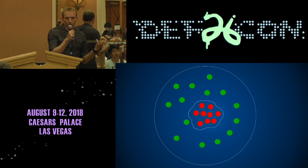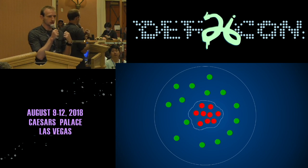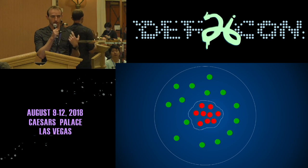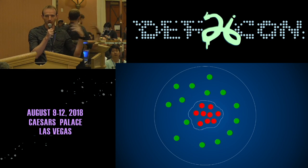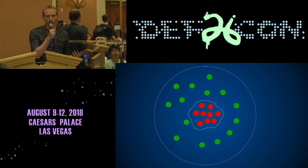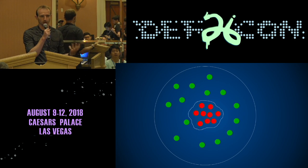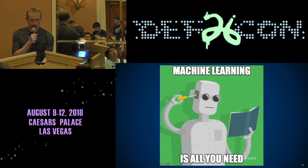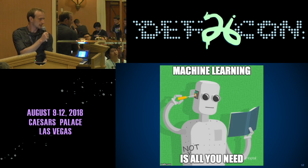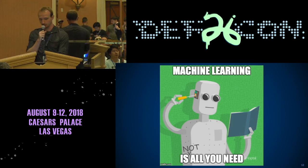ML is actually very well suited for this challenge, but it's important to keep in mind that without the signatures, there would be no ground truth and nothing for machine learning to learn. So ML is not really all you need — you still need humans in the loop.